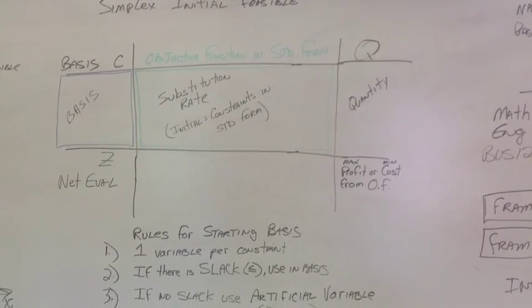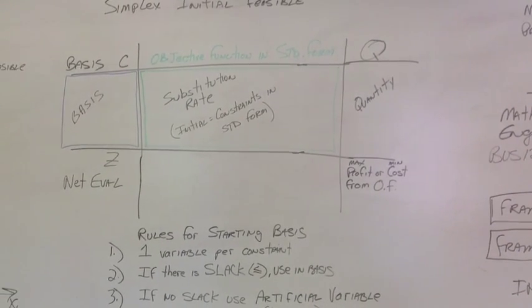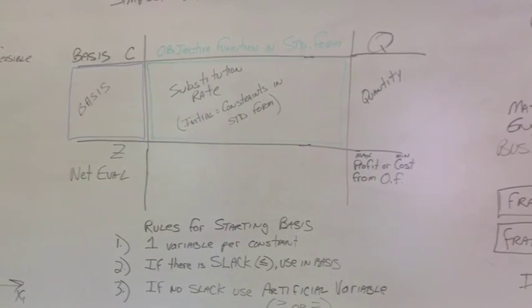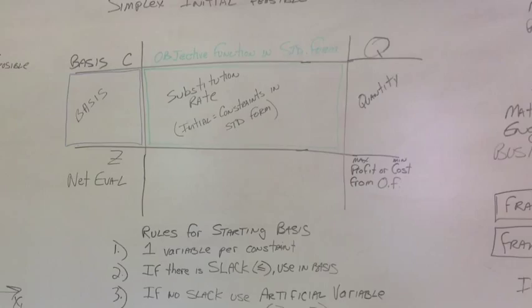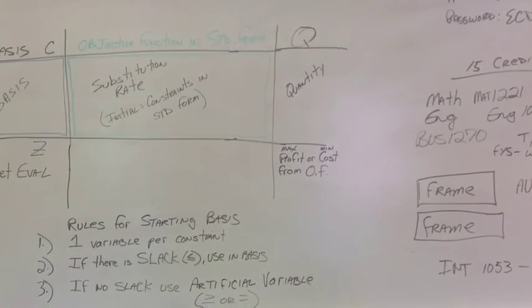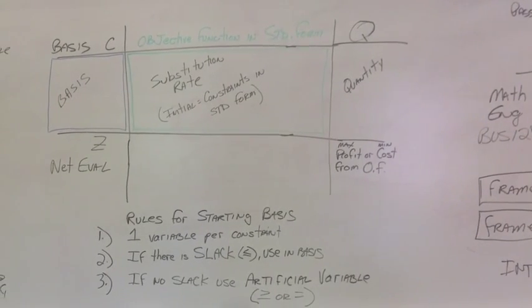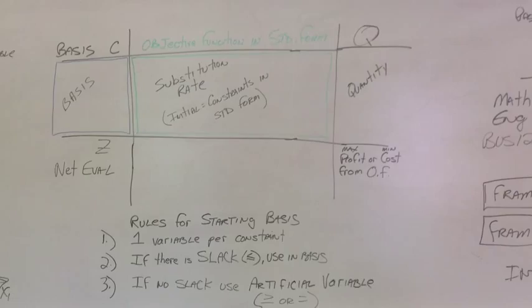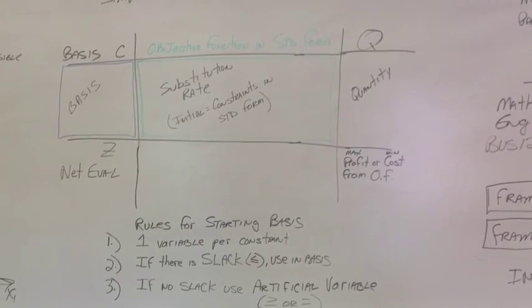Alright, on the bottom we'll calculate our Z and we'll use the net evaluation row. The net evaluation row helps us to determine if we have an optimal solution or not. And then on the bottom right, when we're all done, we calculate our max profit or our minimum cost from the objective function.